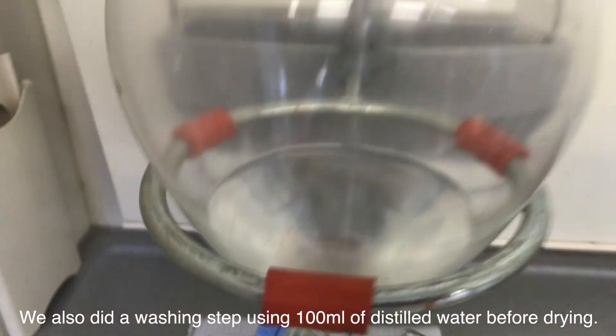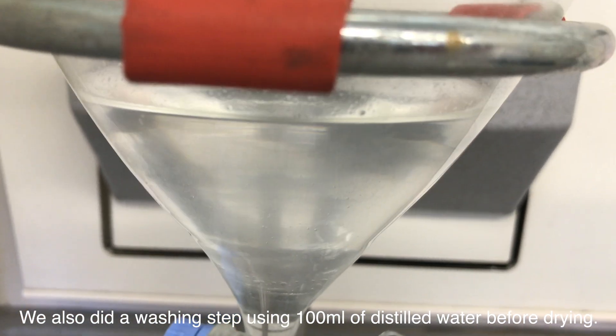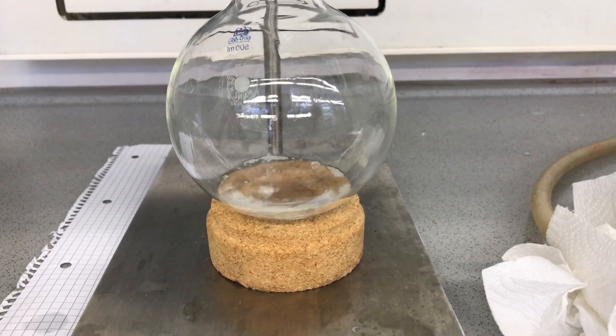Now the ether layer still looks cloudy and this is because there is water in it. We added a drying agent, in our case anhydrous sodium sulfate. After capping and shaking the ether was drained off.